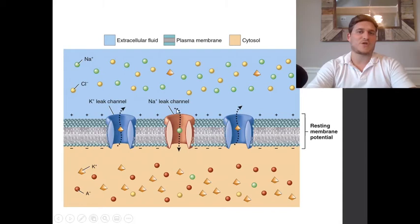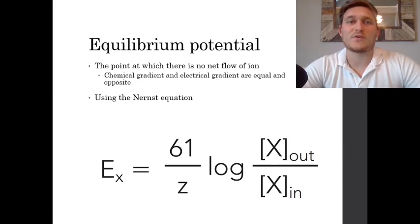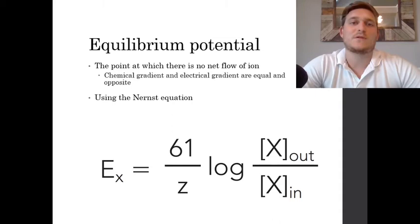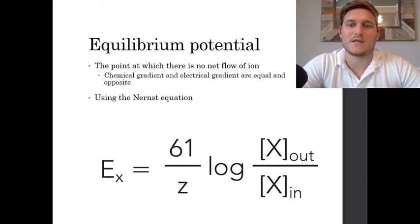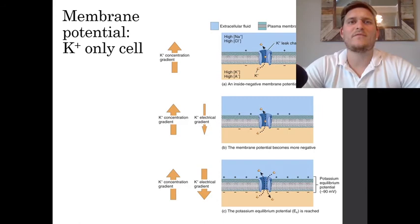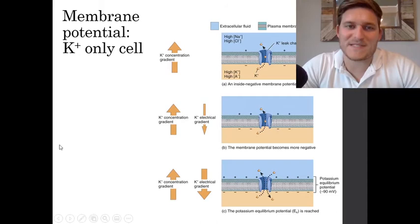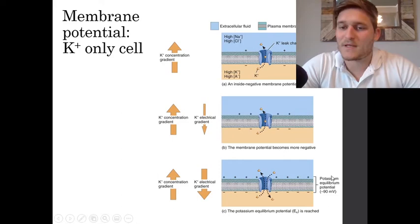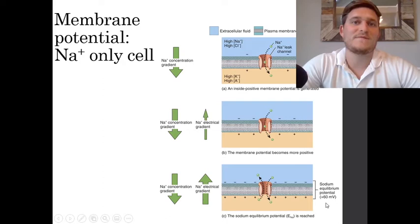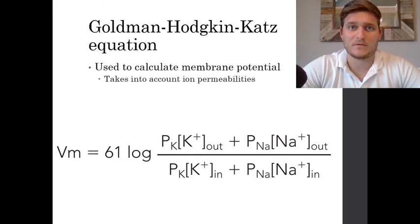What really determines the charge at a given moment is the amount of channels that are open or closed, allowing ions to move. Each ion has its own equilibrium potential — once that ion has hit equilibrium with no net flow in or out of the cell, we can use the Nernst equation to calculate the charge associated with that ion's equilibrium, determined by the concentration of ion on the outside versus inside of the cell. For potassium, if allowed to move freely to equilibrium, its equilibrium potential would be negative 90 millivolts. For sodium, it would be positive 60 millivolts.